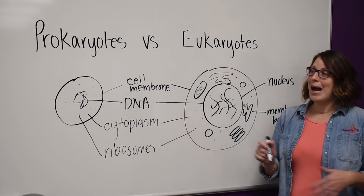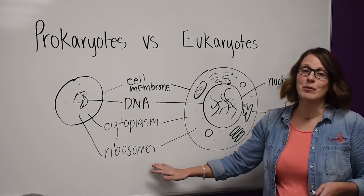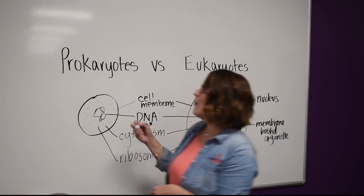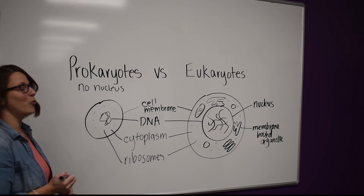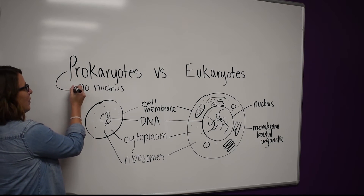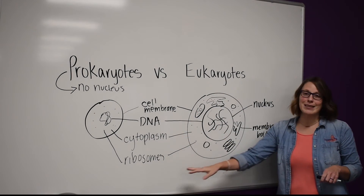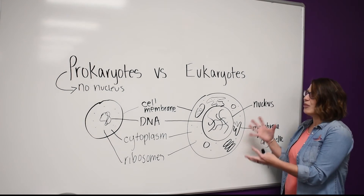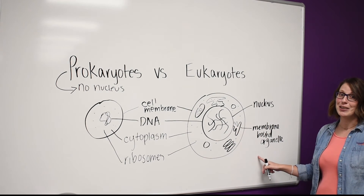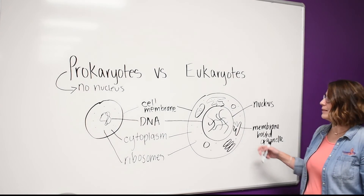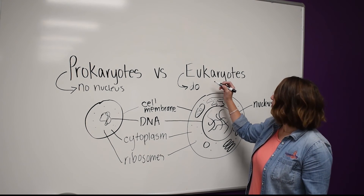To recap: prokaryotes have a cell membrane, DNA, cytoplasm, and ribosomes, but they have no nucleus or other membrane-bound organelles. A good way to remember this is that 'pro' means no. Eukaryotes also have a cell membrane, DNA, cytoplasm, and ribosomes, but they are larger and more complex — they store their DNA in a nucleus and have many membrane-bound organelles with specific jobs. A good way to remember this is that 'you' rhymes with 'do' — you do have a nucleus.